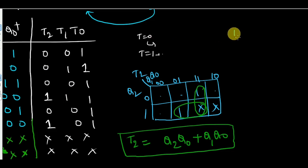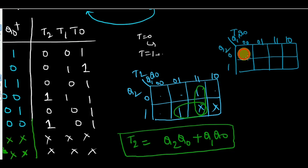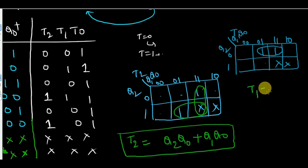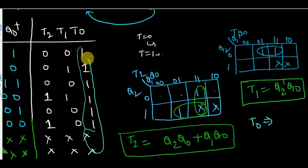For T1, drawing a similar K-map with Q2, Q1, Q0 and plotting the values, the expression for T1 is: T1 = Q̄2·Q0. For T0, you can see that all valid entries are 1, and including the don't cares makes it the constant 1 function, so T0 = 1. No need to draw the K-map for T0.